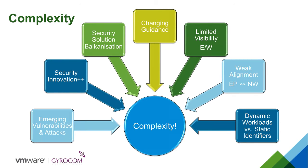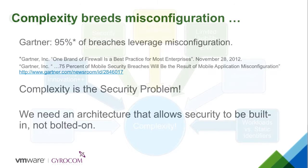Gartner has recognized this issue and attributes a great deal of breach activity to leveraging misconfiguration and policy misalignment in data center environments. Complexity is the security problem from our perspective, and what we need is architectural capabilities that allow security to be architected in, rather than added as an afterthought.